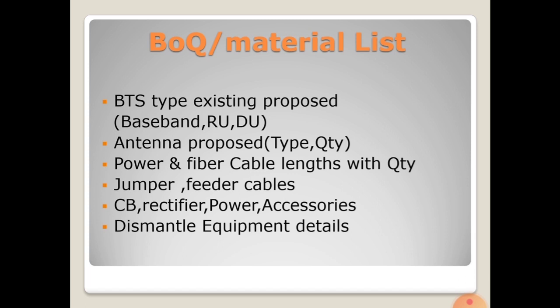The BOQ covers what kind of BTS type, model, and internal hardware is needed, what baseband, radio unit, and digital unit are required, how many antennas are needed with their port configuration and model, power cable and fiber cable lengths and quantities for material ordering, circuit breakers, rectifiers, and other accessories for power — since power is essential for any cell site. It also covers what equipment needs to be dismantled — sometimes BTS, antennas, or cables — and this list should be included in the BOQ or equipment material list.